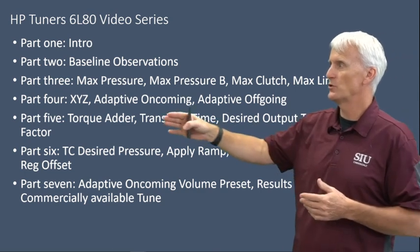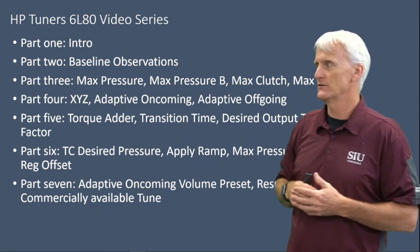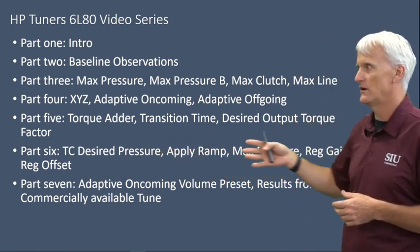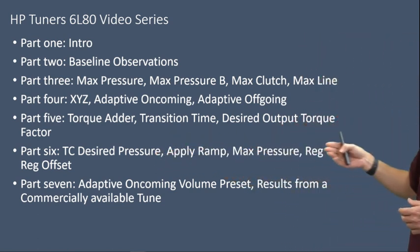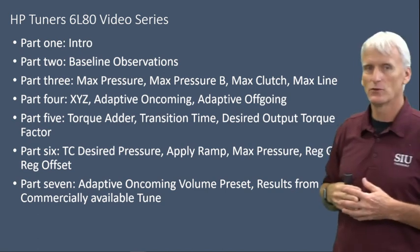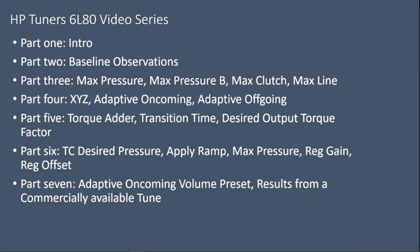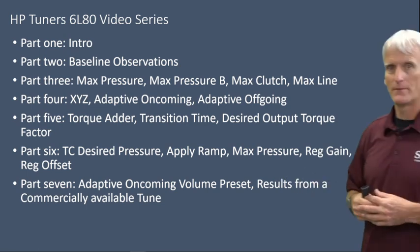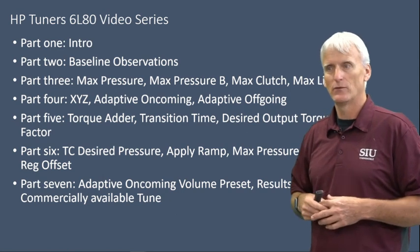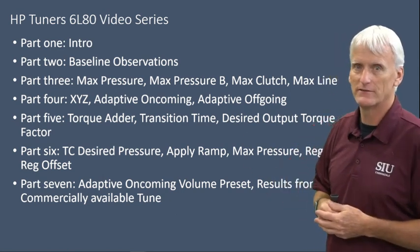Part five is torque adder, transition time, and desired output torque factor. Part six deals with the torque converter clutch — things like the apply ramp, pressures, regulator gains and offsets. And part seven covers the adaptive oncoming volume preset and results from a commercially available tune, where we look at how those pressures change based on their settings.